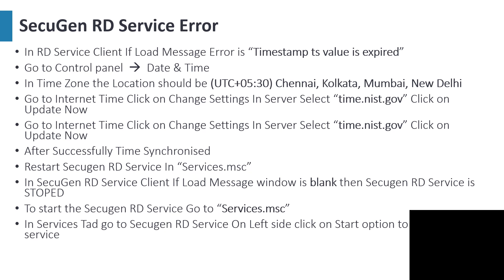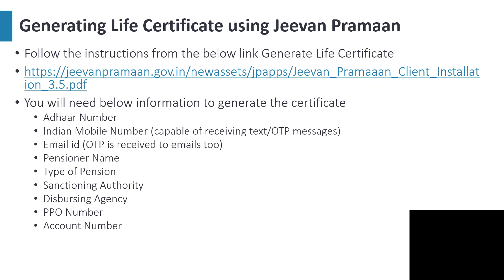To restart the RD service, go to Start, search for Run, and in the Run window type services.msc. There you will see a list of services — look for the SecuGen service, right-click on it, and start the service. Once it starts, you can see the messages loading again in the SecuGen RD Services window.